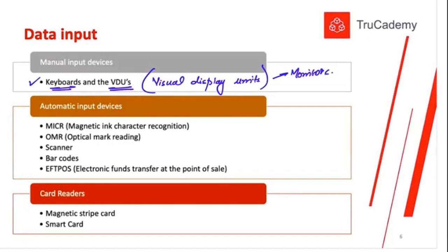We can also use automatic input devices. First, MICR — Magnetic Ink Character Recognition. This technology is used in cheques. Whatever is printed on a cheque uses magnetic ink. When you process that cheque at the bank, the cashier puts it on a specialized scanner that reads only those characters written in magnetic ink. This is one way of automatically inputting data.